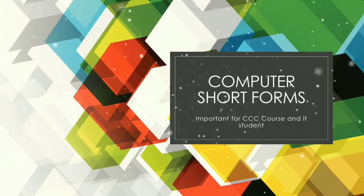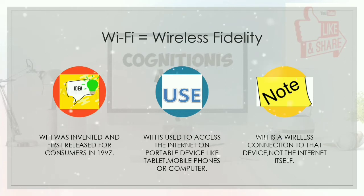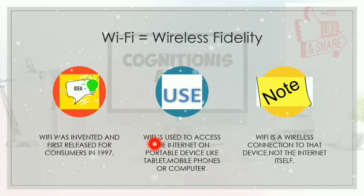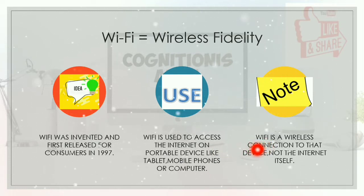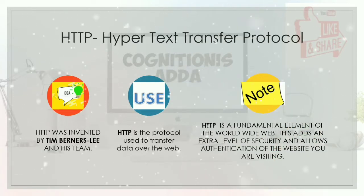The first topic is Wi-Fi. Wi-Fi's full form is Wireless Fidelity. Wi-Fi was invented and first released for consumers in 1997. Wi-Fi is used to access the internet on portable devices like tablets, mobile phones, or computers. Wi-Fi is a wireless connection to the device, not the internet itself.